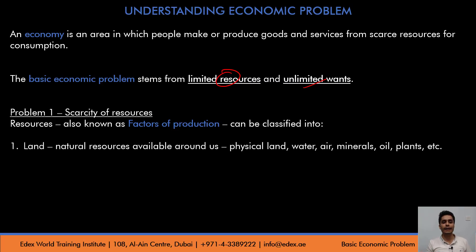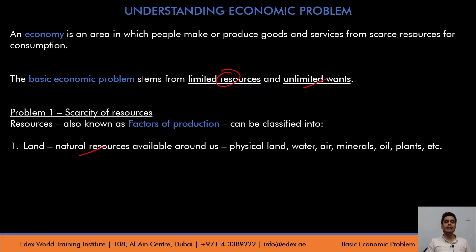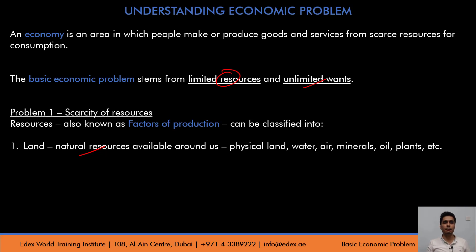The first category is land. Land will include all your natural resources available around you on earth. Students have the misconception that land includes only bare land, physical land, but that's not true. Land will include anything that is available naturally to us — for example, physical land, water, air, minerals, oil, plants, etc. Anything you see around you naturally comes under land.